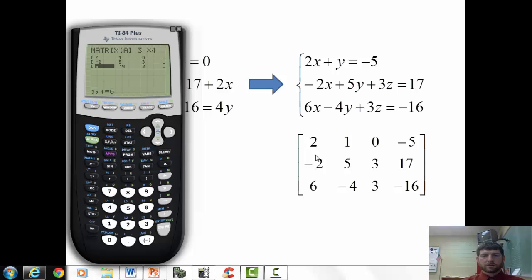Let's double check it. X's are 2, negative 2, 6. Y's are 1, 5, negative 4. Z's are 0, 3, 3. Constants are negative 5, 17, negative 16. So we matrix edited already. Now we'll quit. Second quit.